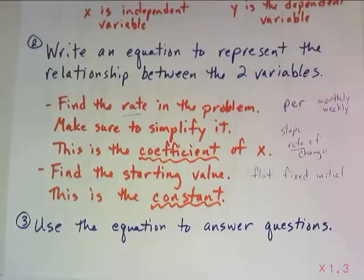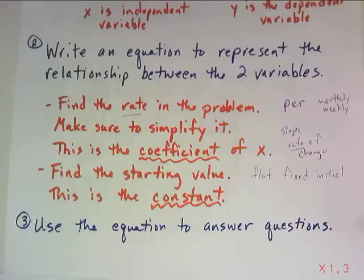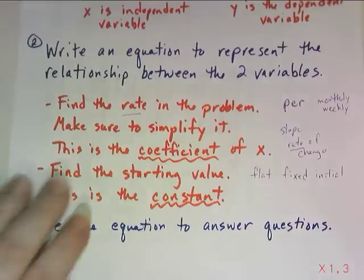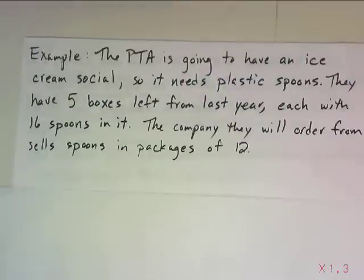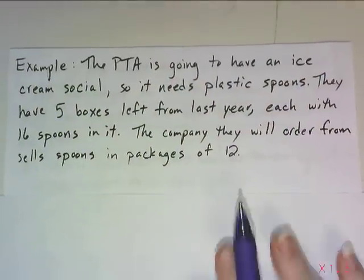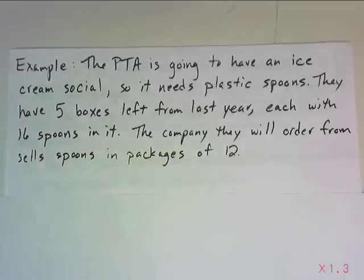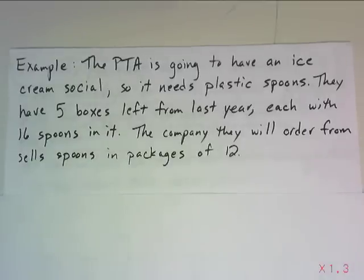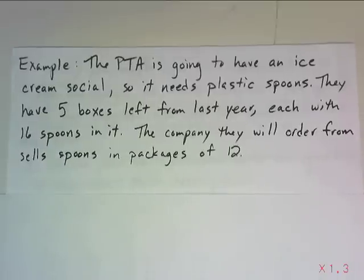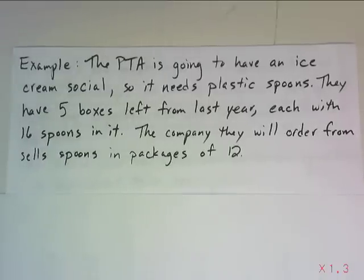Last but not least, we're going to use that equation to answer some questions — that's why it's important to put in this work ahead of time. You need to not only be able to write the equation but understand what the different variables represent so you'll be able to use it to solve problems. Let's take a look at an example. Let's say the PTA is going to have an ice cream social, so they need to get some plastic spoons. They have five boxes of spoons left over from last year, each with 16 spoons in it.